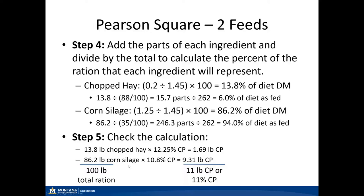We can then check that calculation in step five to make sure it met our 11% protein goal. We have 13.8 pounds of chopped hay times 12.25% protein, which gets us 1.69 pounds of protein. We needed 86.2 pounds of corn silage times 10.8% protein, which gets us 9.31 pounds of protein. Adding 9.31 to 1.69 gives us 11 pounds of crude protein. 11 divided by 100 equals 11% protein — confirmed.